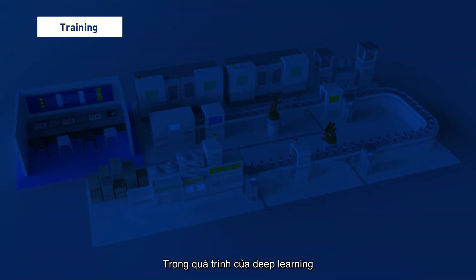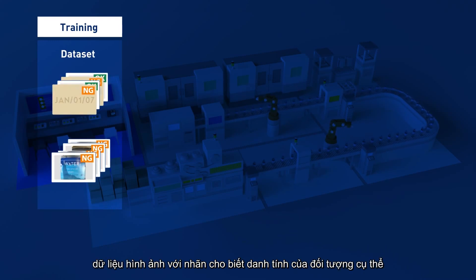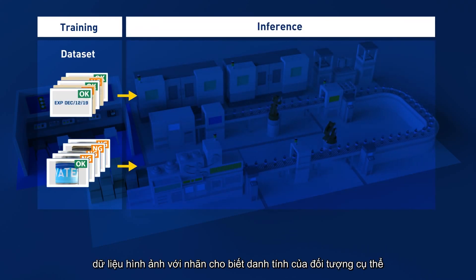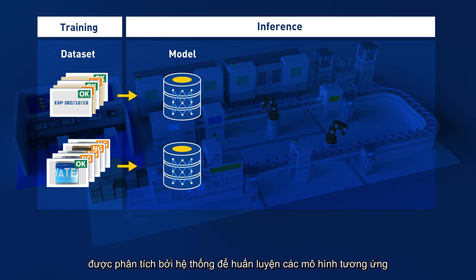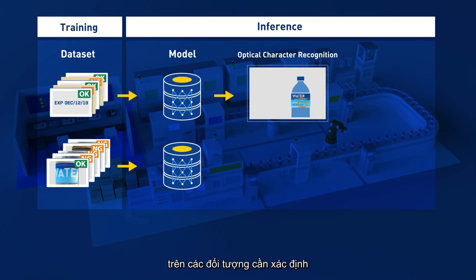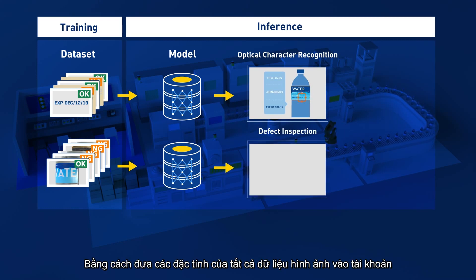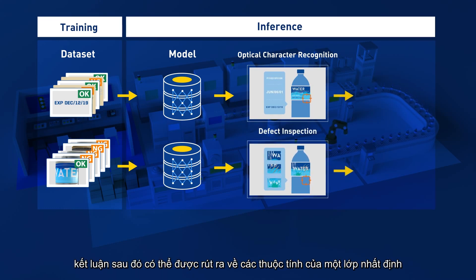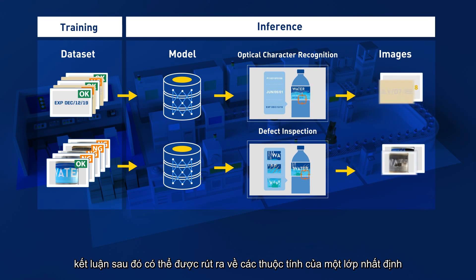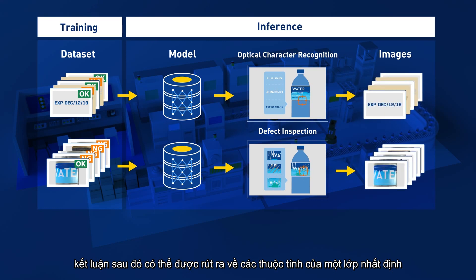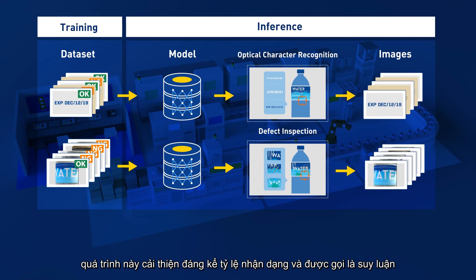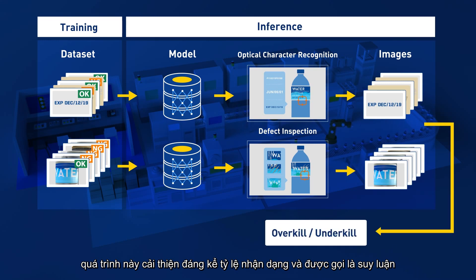In the process of deep learning, image data with labels indicating the identity of a particular object are analyzed by the system to train corresponding models on the objects to be identified. By taking the features of all image data into account, conclusions can then be drawn about the properties of a certain class. This process significantly improves identification rates and is called inference.